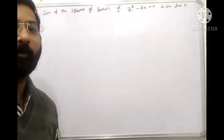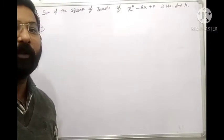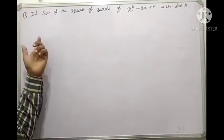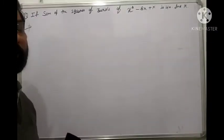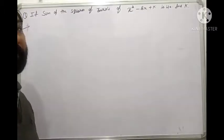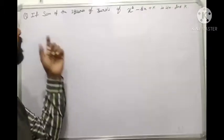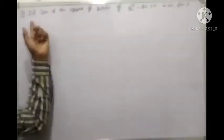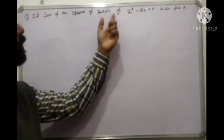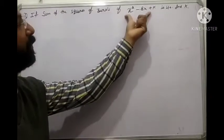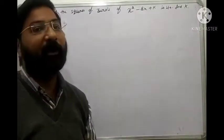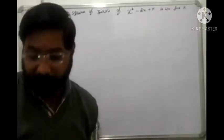Hello, welcome to the online class of CR International School. We have practiced polynomials. We have a question: if the sum of the squares of zeros of this polynomial is 40, then find the value of k.